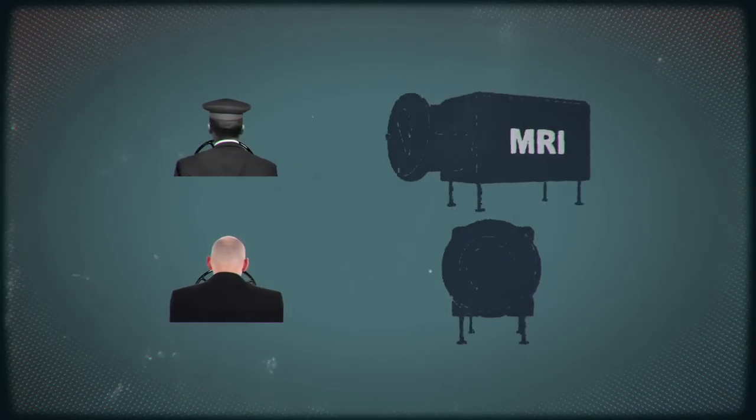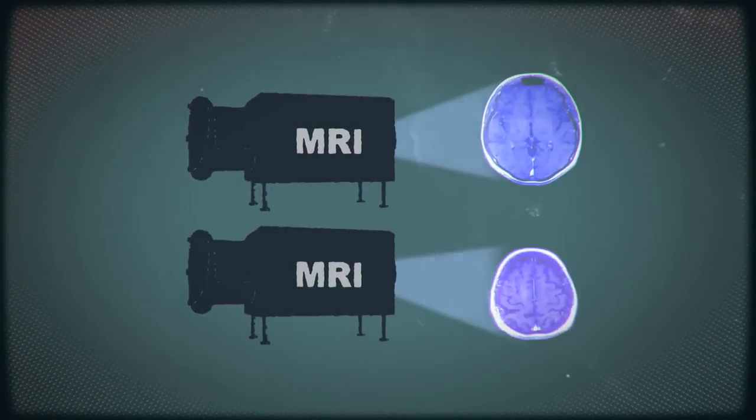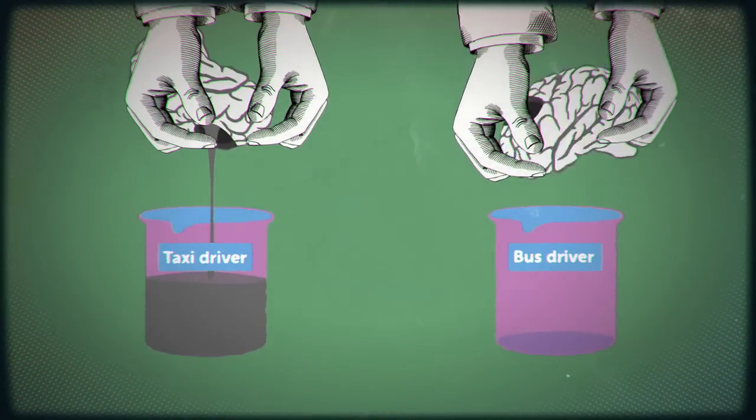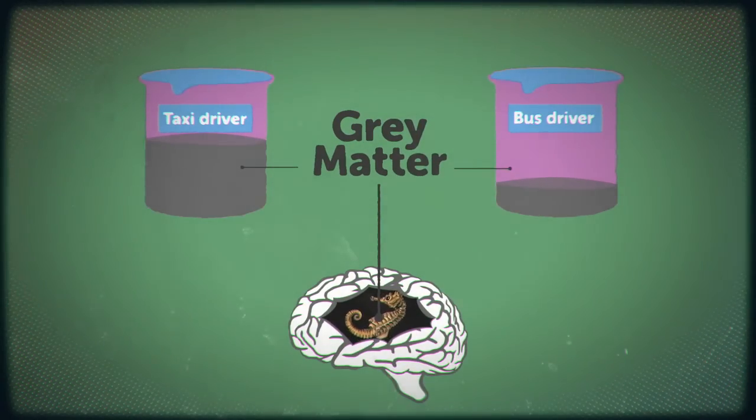The researchers took MRI scans of both bus and taxi drivers. But it was the cabbie's brain that showed something incredible. Their brains contained far more grey matter in the back part of the hippocampus than the bus drivers.